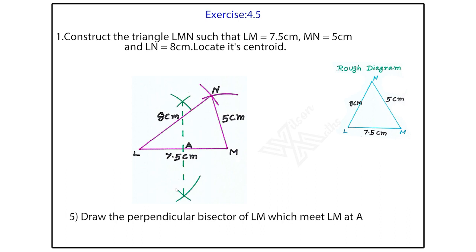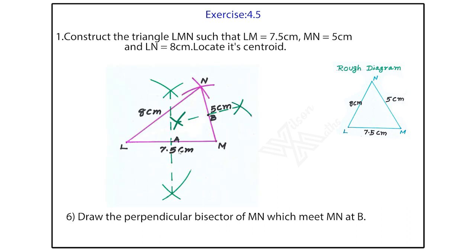Similarly, the same thing you do it for next. This is your sixth step. Previously you had done for LM. Now you have to make it for M and N. From M, in this 5 cm, take more than half, nearly 4 cm. Like that you take and make it one arc left side, one arc right side.